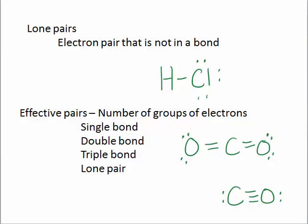And they are lone pairs and effective pairs. So a lone pair is an electron pair that is not in a bond. So you can see in this Lewis structure for hydrochloric acid, you can see that chlorine has three lone pairs. It's not involved in the bond between hydrogen and chlorine.